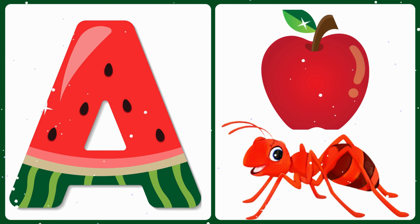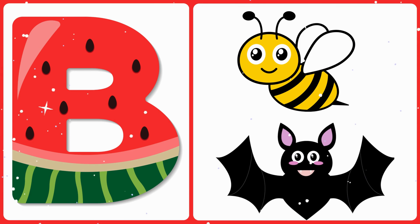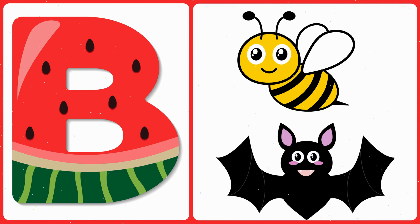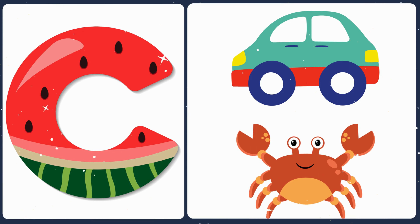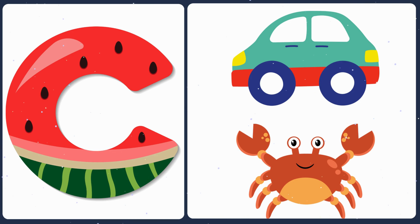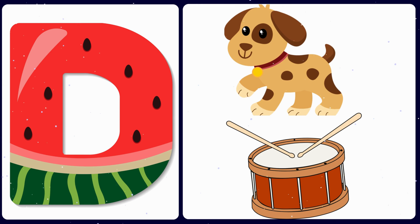A — A is for apple, A is for ant. B — B is for ball, B is for bat. C — C is for car, C is for crab. D — D is for dog, D is for drum.